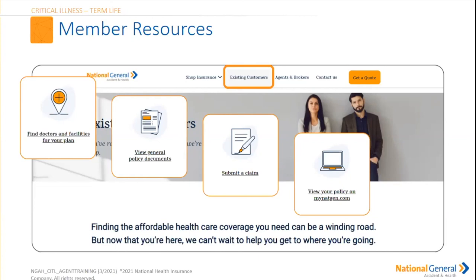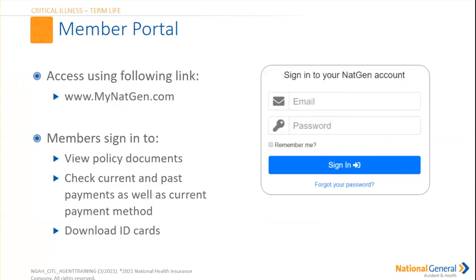The insured can view their general policy documents and submit a claim. Your insured can also go to mynatgen.com to view policies, update mailing or billing information, and access ID cards. When you've completed an application with your insured and they receive the email to authorize and view everything, this is their access link. They'll create their password at mynatgenhealth.com and can go back to view policy documents and get their ID card.